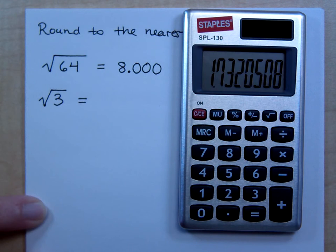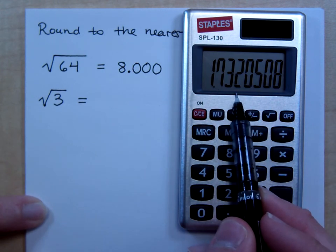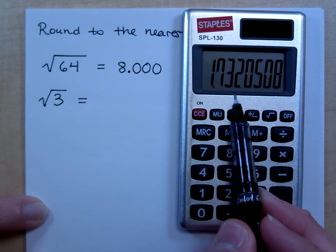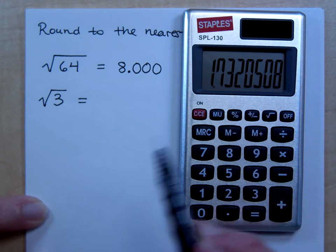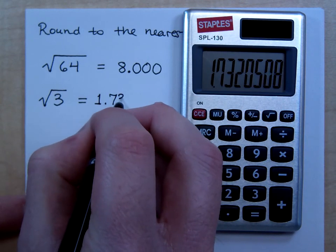You see, here's your decimal here, so we've got to go to the thousandth. Seven, three, here's the two, and to the right of that is a zero, so I'm not going to round up. It's going to stay as a two. So, 1.732.